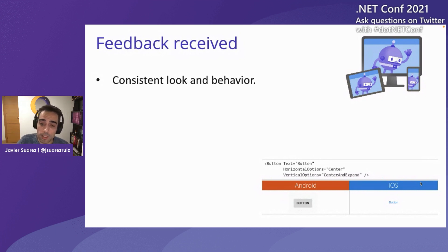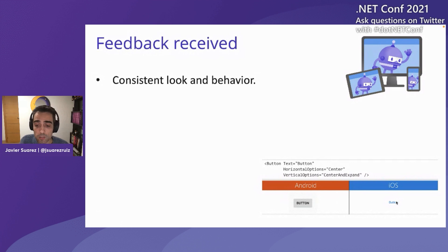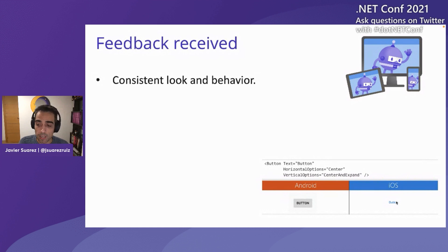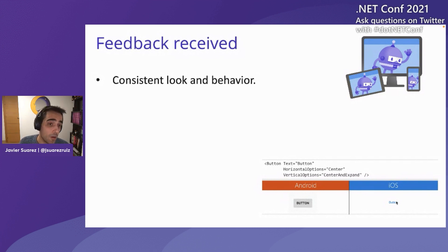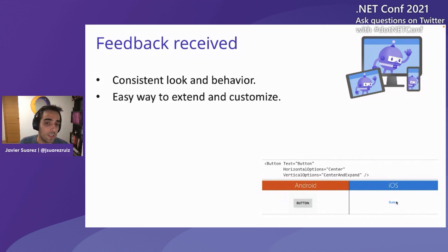You can work with styles to achieve a similar look and feel by changing the background, corner radius, colors, etc. But in some cases that will require native code, use the mappers, or a custom handler to achieve this consistency. People want consistent look and feel and also an easy way to extend and customize. We improved the custom render architecture to the new handler architecture that requires less code to extend and customize, but we are still working with native controls in every platform.